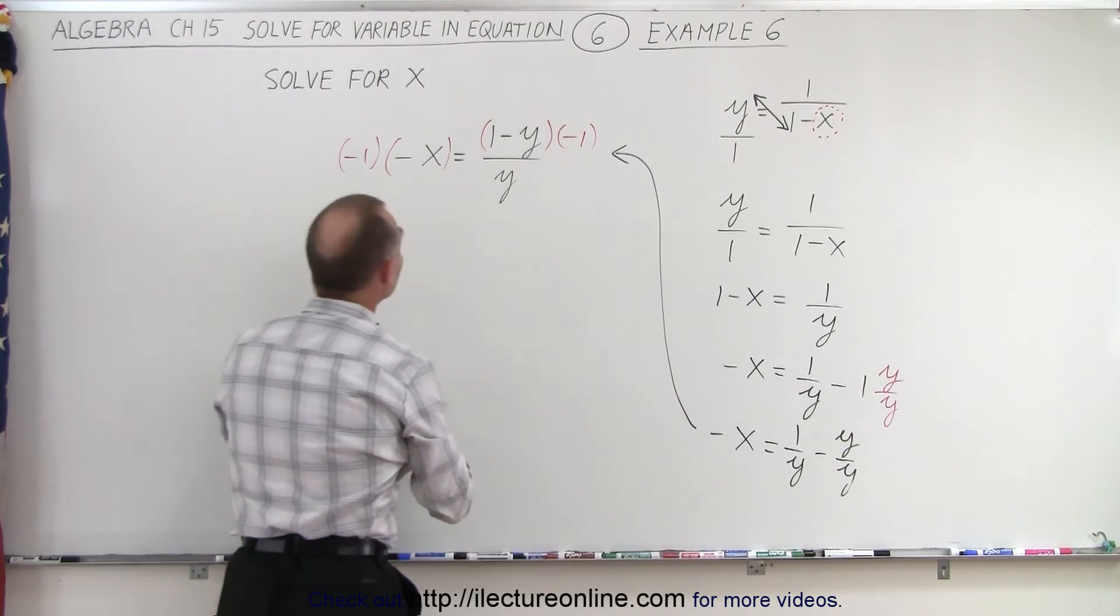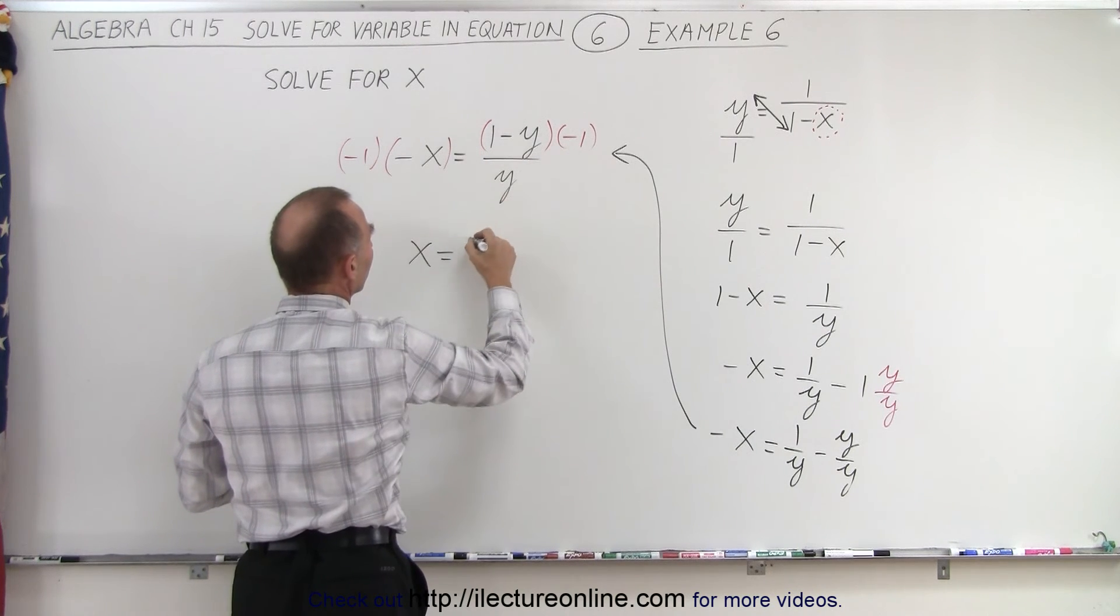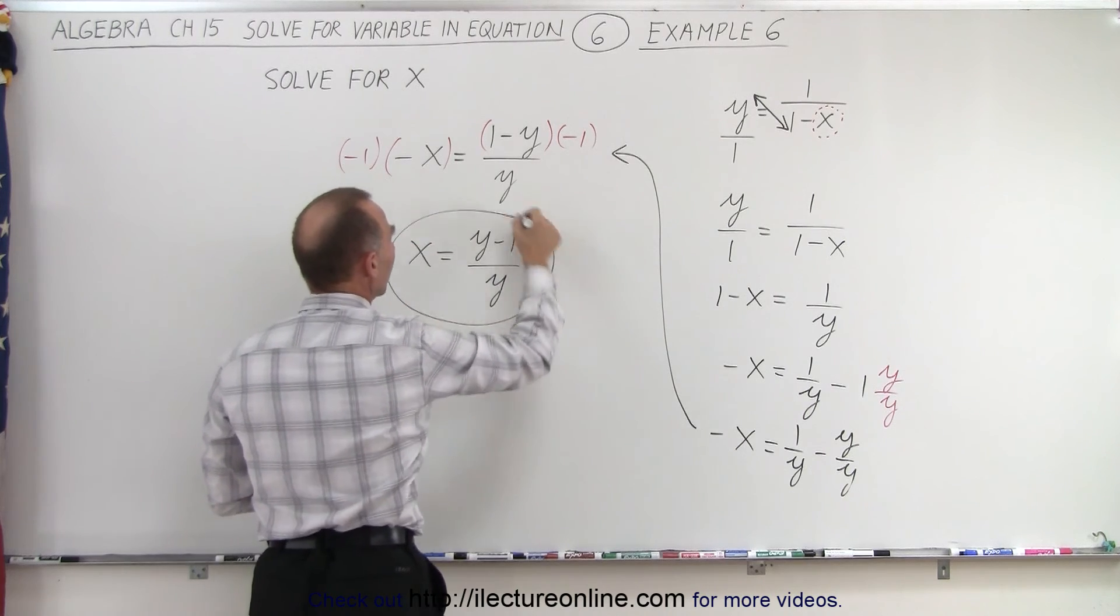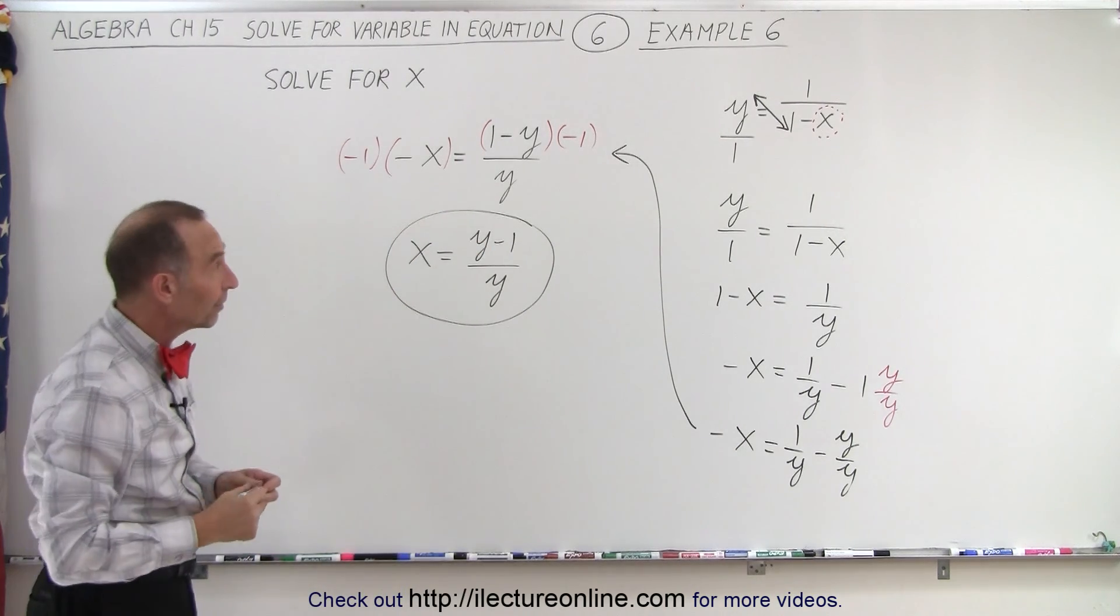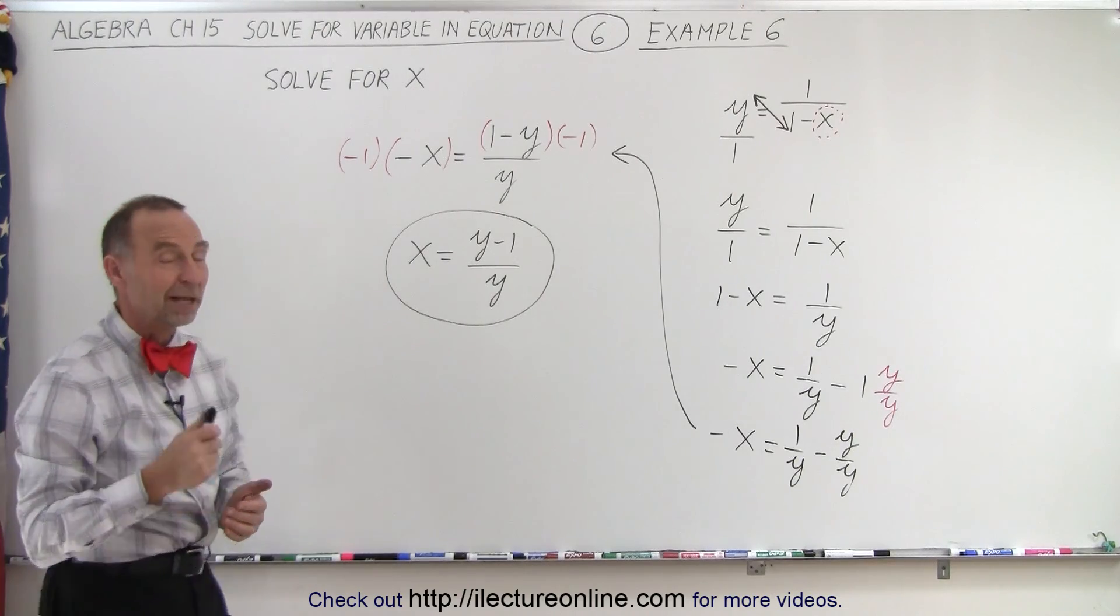which means that we now get x is equal to, instead of 1 minus y, we now can write it as y minus 1 over y, and that is the simplified and cleanest way to write the equation in terms of x. And that's how it's done.